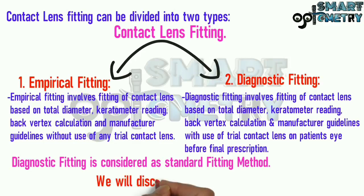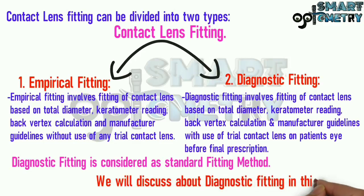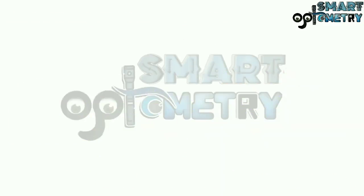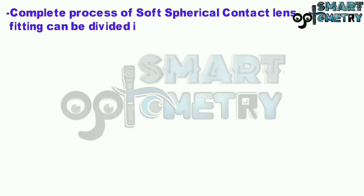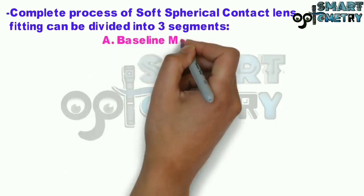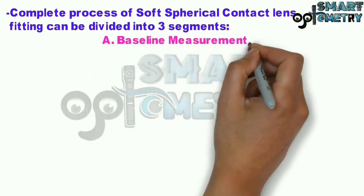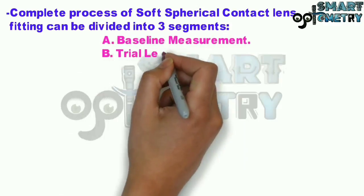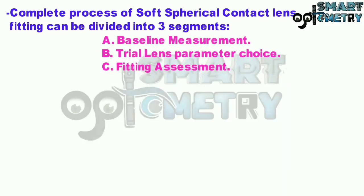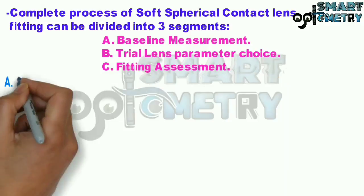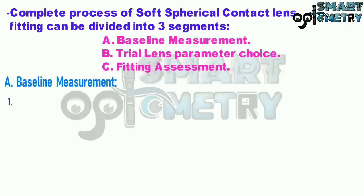We will discuss about diagnostic fitting in this video. The complete process of soft spherical contact lens fitting can be divided into three segments: A) baseline measurement, B) trial lens parameter choice, and C) fitting assessment.